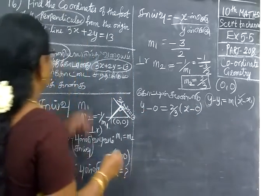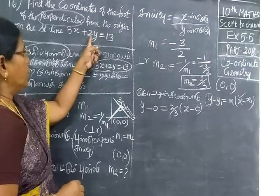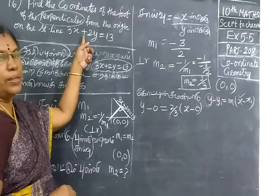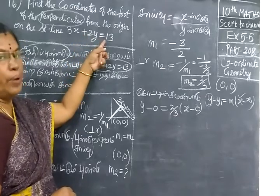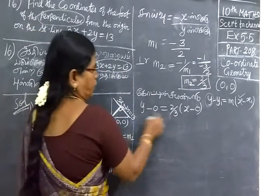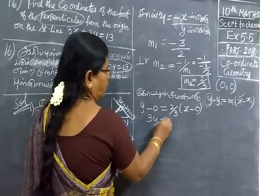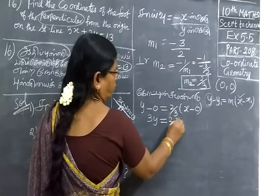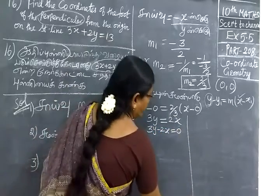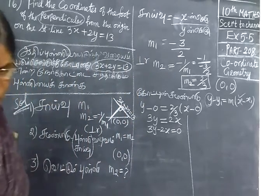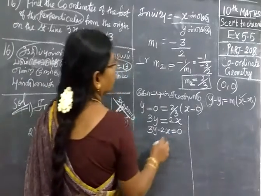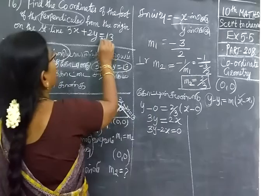X minus X1 is 0. Using this method, we have to put the Y coefficient in the bottom, X coefficient in the top, Y is sign, plus is minus, minus is plus, plus K as equals. So 2x minus 3y equals 0. So what is this? This is the equation.